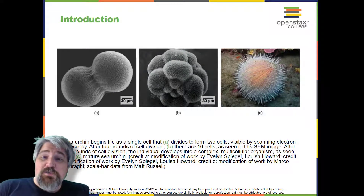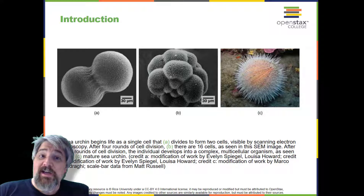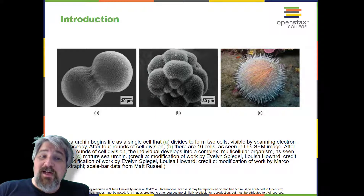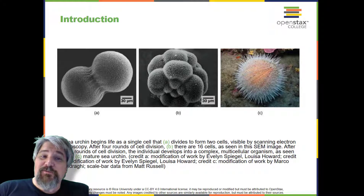Introduction. The individual, sexually reproducing organism, including humans, begins life as a fertilized egg or zygote. Trillions of cell divisions subsequently occur in a controlled manner to produce a complex, multicellular human. In other words, that original single cell was the ancestor of every other cell in the body. Once a human individual is fully grown, cell reproduction is still necessary to repair or regenerate tissue.